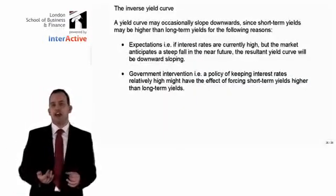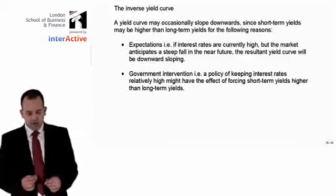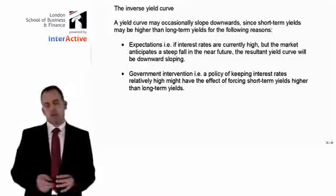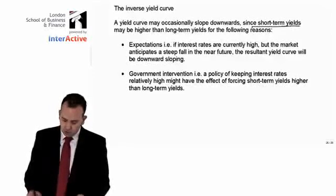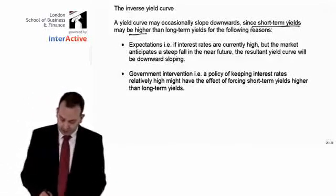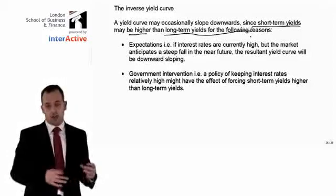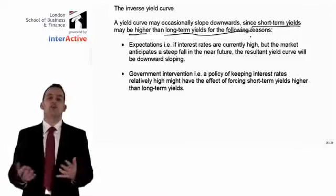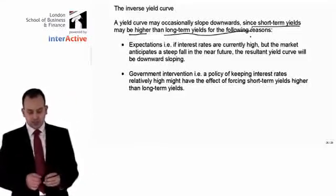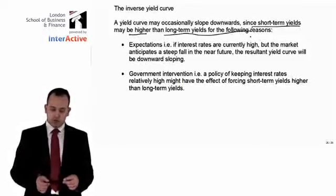However, it is possible to have what's called an inverse yield curve, where instead of being upward sloping as time progresses, it's actually downward sloping. A yield curve may occasionally slope downwards since short-term yields may be higher than long-term yields. This means that if you invest your money for a relatively short period of time, you get a high return, but if you invest for a long period of time, you'd actually get back a lower rate of interest per annum — and that key point is important: it's a percentage return per annum, not necessarily the total amount of money you get back.